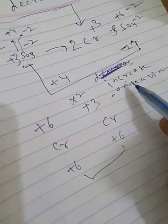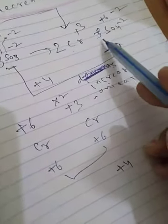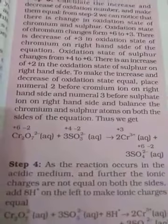You can verify: for chromium, +6 decrease to +3, multiplied by 2 gives a total decrease of 6. For sulfur, +4 increase to +6, a change of +2, multiplied by 3 gives a total increase of 6. These are now equal. The equation is now: Cr2O7²⁻ plus 3SO3²⁻ gives 2Cr³⁺ plus 3SO4²⁻.